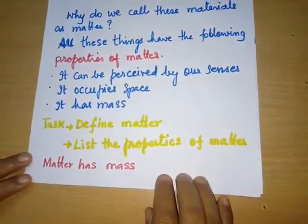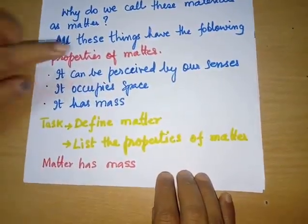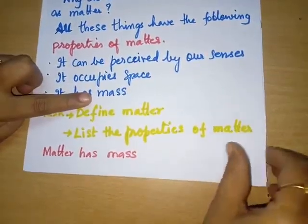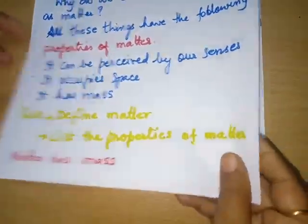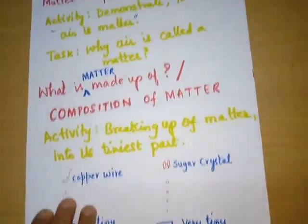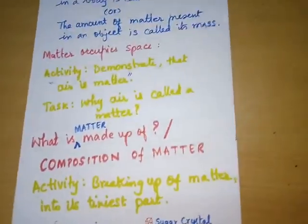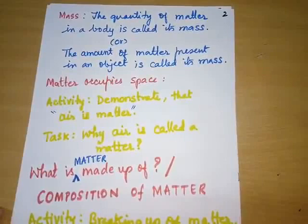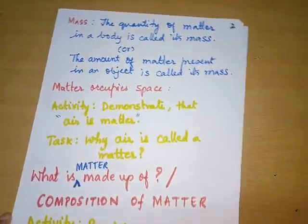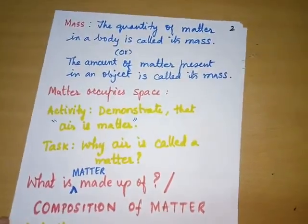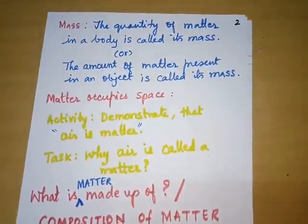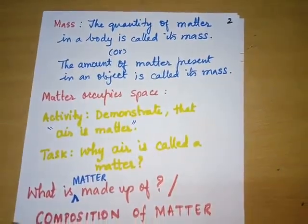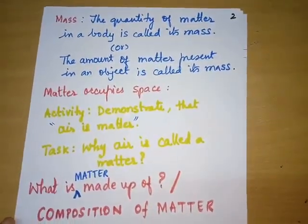Just now we were discussing that matter has mass. What is this mass? Mass is nothing but the quantity of matter in a body, or we can define it as: the amount of matter present in any object is called its mass.